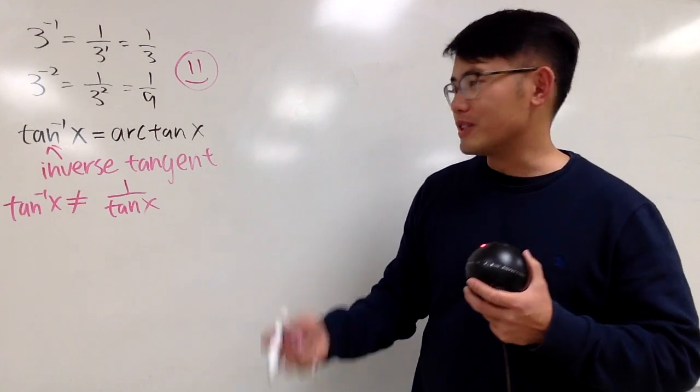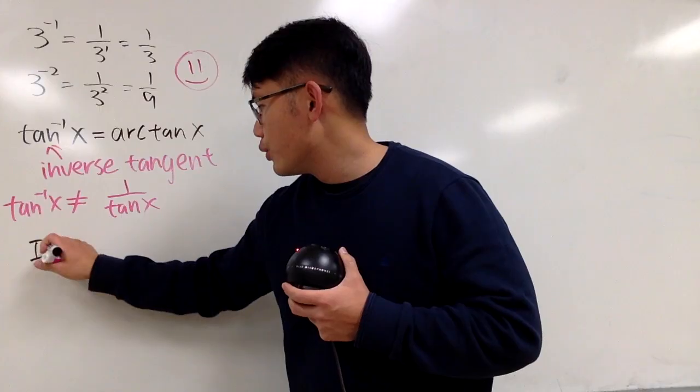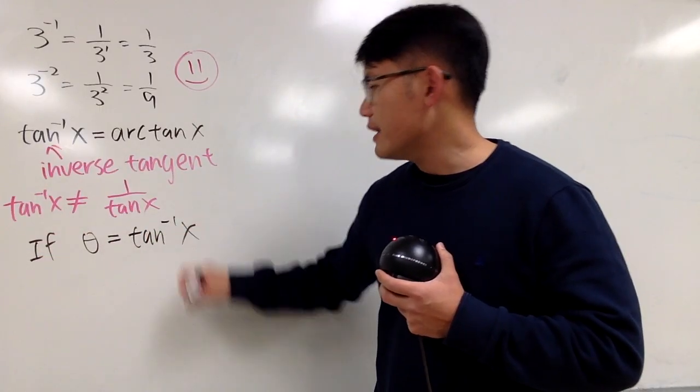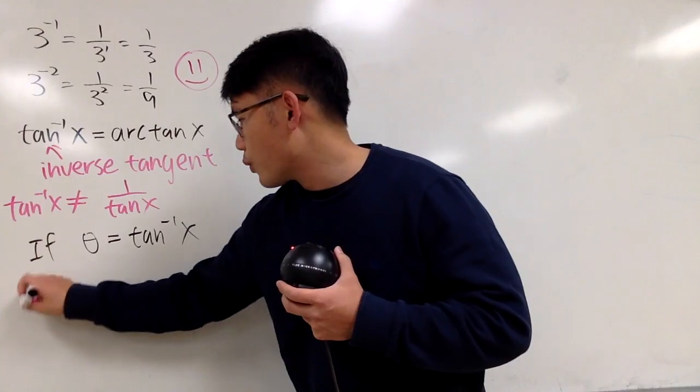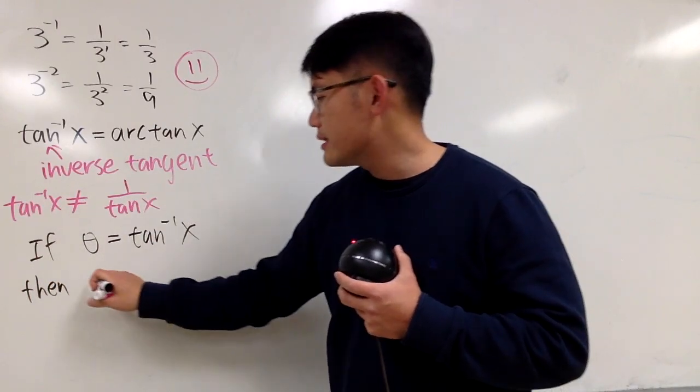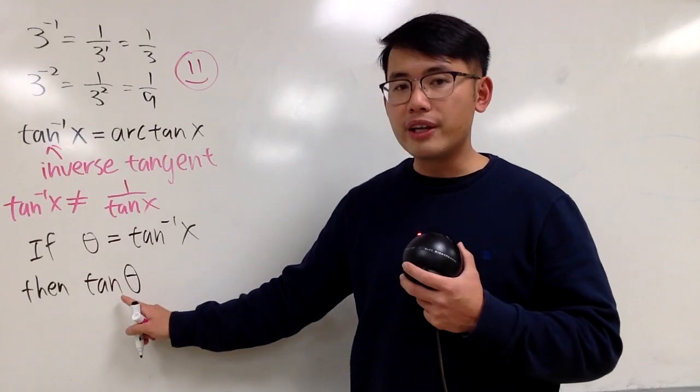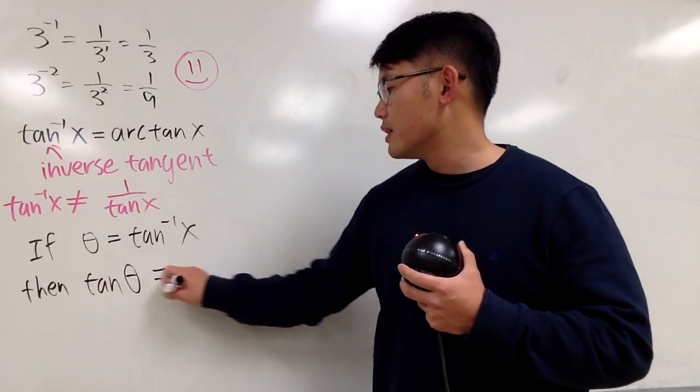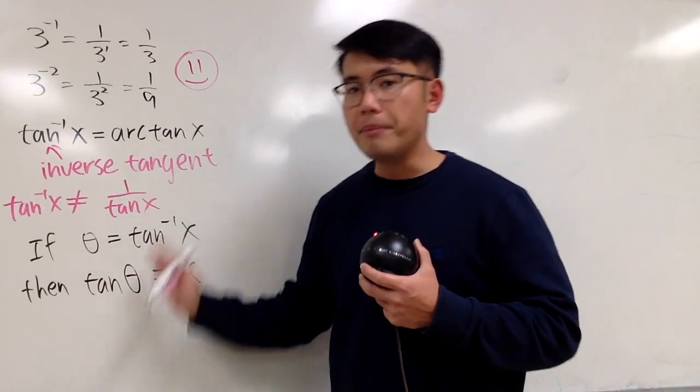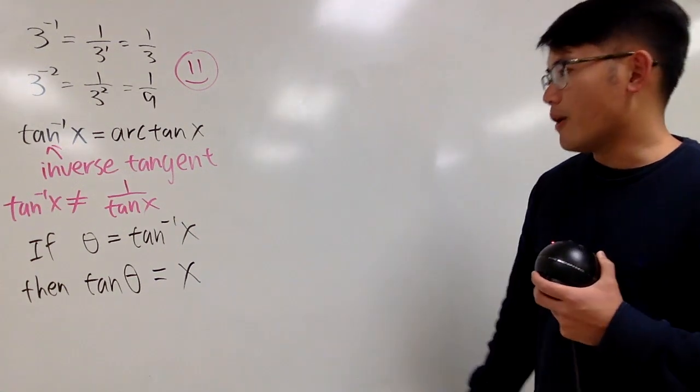Don't forget what inverse means. For example, if you have theta equals the inverse tangent of x, then what you get is, if you apply the regular tangent on both sides, this means tangent of theta, and notice this is a regular tangent, will give you x. So this is what the inverse tangent means. Same thing for inverse sine, inverse cosine, etc. No problem at all.